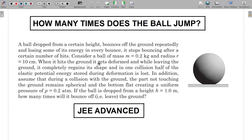When the ball hits the ground it gets deformed, and while leaving the ground it completely regains its shape. In one collision, half of the elastic potential energy stored during deformation is lost. Additionally, during a collision the part not touching the ground is spherical and the bottom is flat, creating a uniform pressure of p = 0.2 atmospheres.